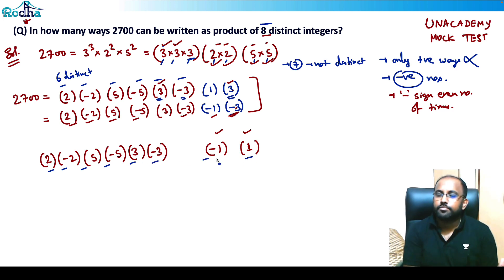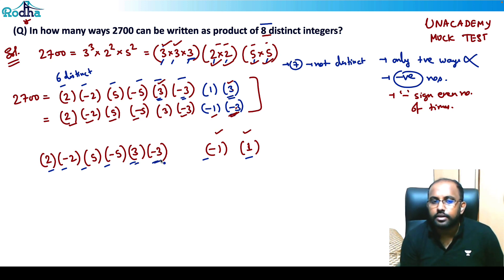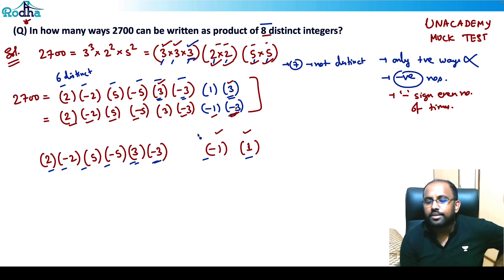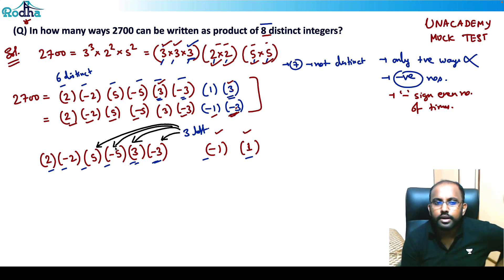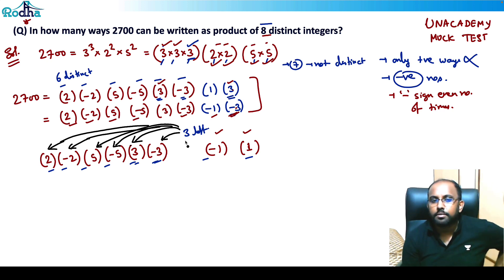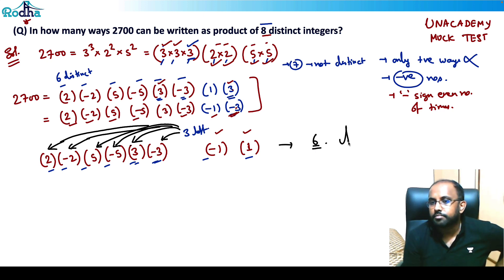But wait — I have: 2, -2, 5, -5, 3, -3 — that's already eight numbers, but one factor of 3 is still left over from the factorization. This remaining 3 can be multiplied into any one of the six numbers in the set. So there are six possible ways.